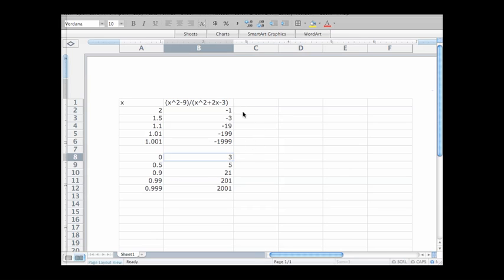And I'm going to clear out the blank spot. Okay, so what does this information from the numerical calculations, what does this all tell me about the limit as x goes to 1 of this function here?